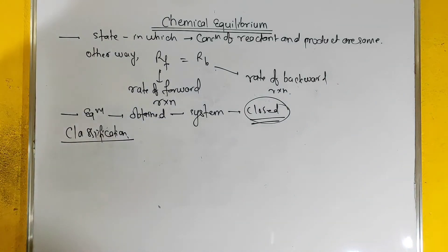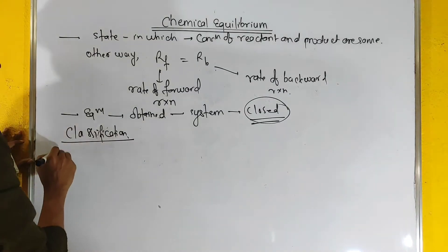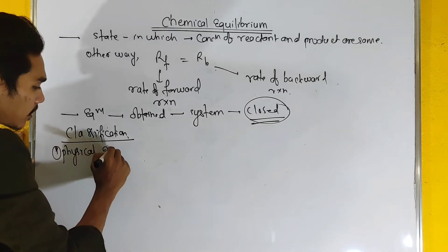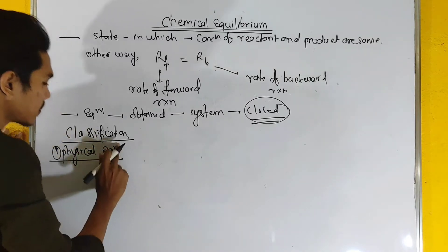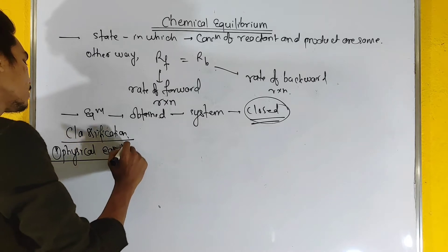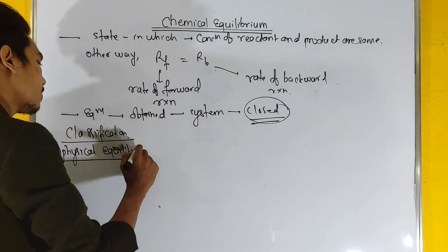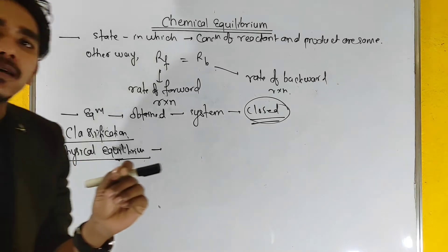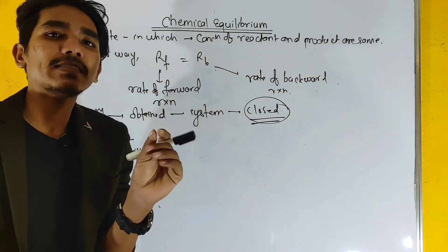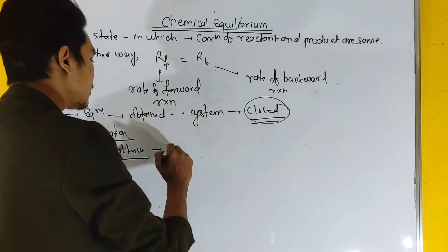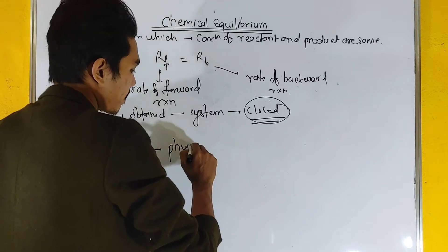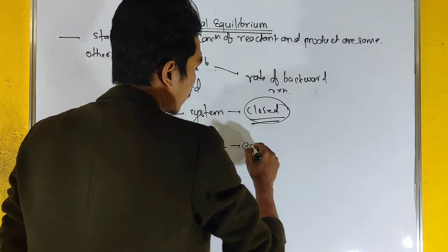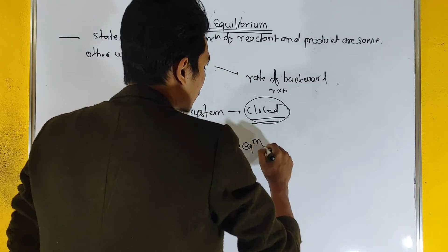Physical equilibrium: when equilibrium is set up in the physical state — that is, when changes occur only in the physical state of a substance — it is called physical equilibrium.